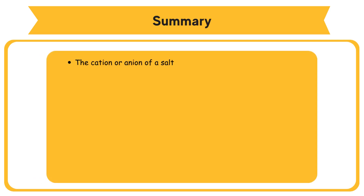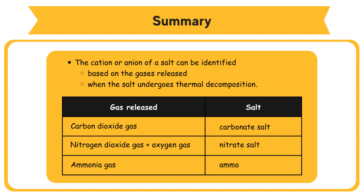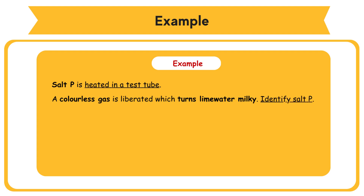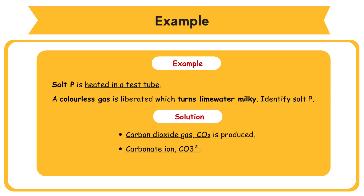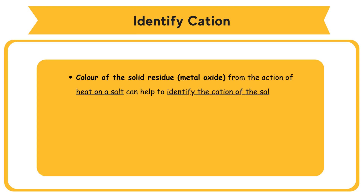The cation or anion of a salt can be identified based on the gases released when the salt undergoes thermal decomposition. If carbon dioxide gas is released, then it is a carbonate salt. If nitrogen dioxide gas plus oxygen gas is released, then it is a nitrate salt. If ammonia gas is released, then it is an ammonium salt. Example: Salt P is heated in a test tube. A colorless gas is liberated which turns lime water milky. Identify salt P. Solution: Carbon dioxide gas CO2 is produced. Carbonate ion CO3²⁻ is present. P is a carbonate salt.